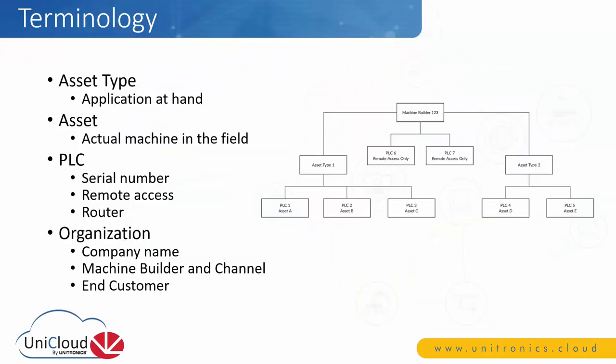An asset type is program-specific — you can think of it almost as a template. One program can be downloaded to many different machines. Assets are the actual individual machines in the field; a Unitronics PLC, for example, is an asset. PLCs are validated on the cloud by serial number, and once validated, data can be collected and remote access can be accomplished.